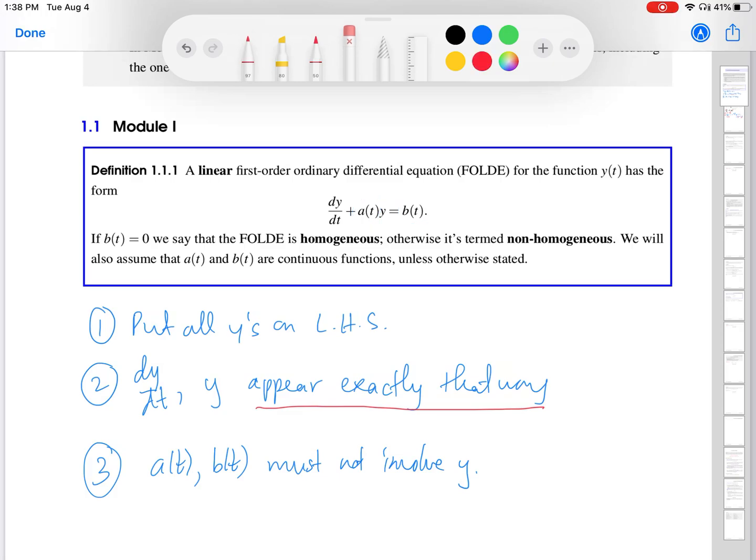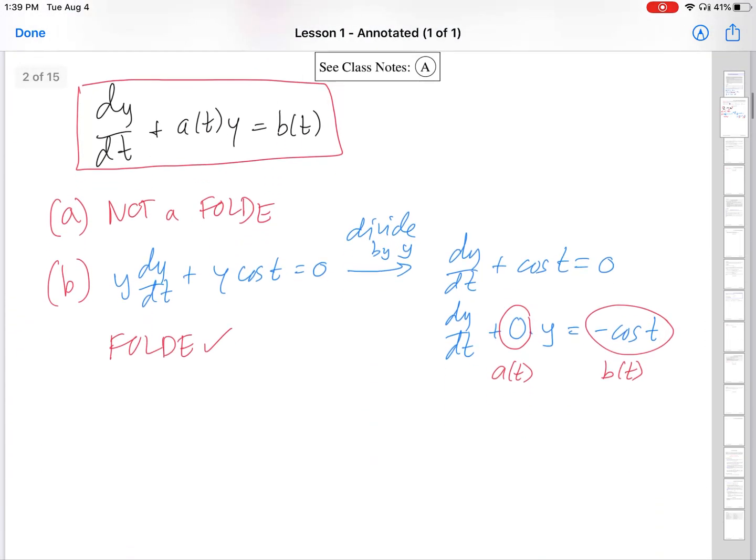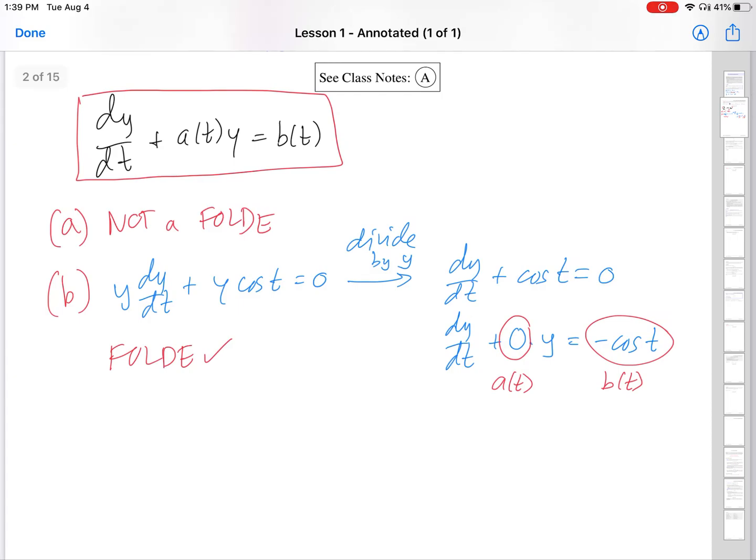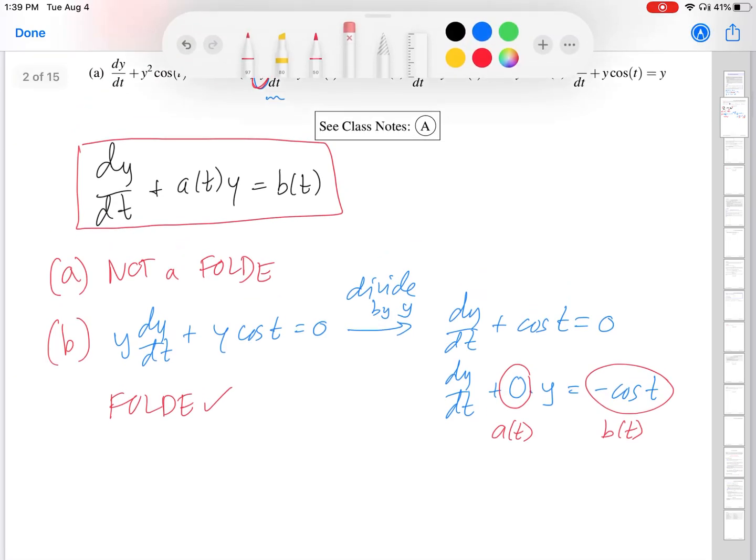I'm going to scroll back up to the definition and talk about that for a second. So, once you know that an ODE is linear, then you look at the B of T term. So, if this is zero, then it's homogeneous. Otherwise, if it's anything other than zero, it's non-homogeneous. So, we're going to go back to our example and see what that B of T term looks like. For this example, we are looking at a B of T term that is not equal to zero. So, that means that the ODE is non-homogeneous.